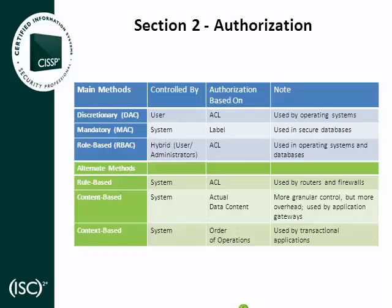The last authorization method is context-based. Context-based access control is typically implemented in transactional applications, and authorization decisions are solely dependent upon the context of the request. For example, to perform a transfer at your bank, you must withdraw money from one account and deposit into another. If you attempted the deposit before the withdrawal, access would be denied merely because of the sequence of the transaction. This is how context-based access control works.